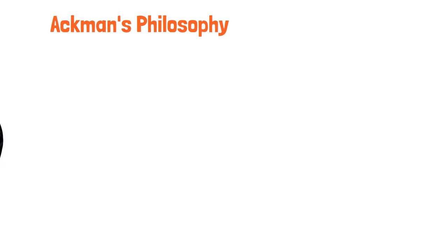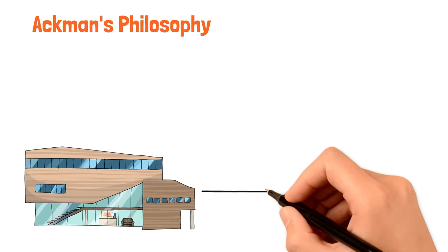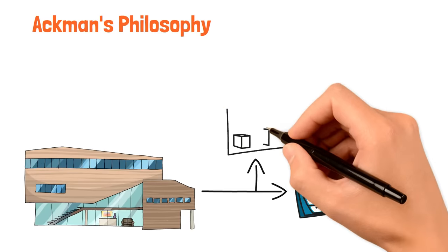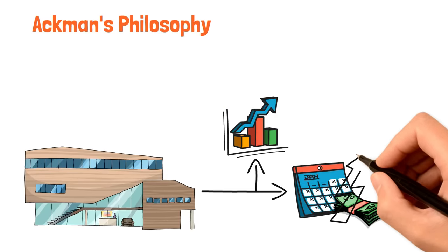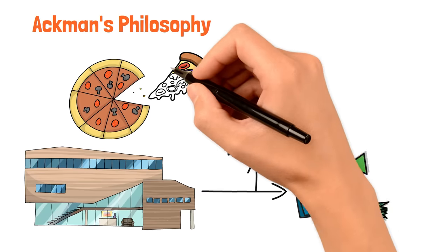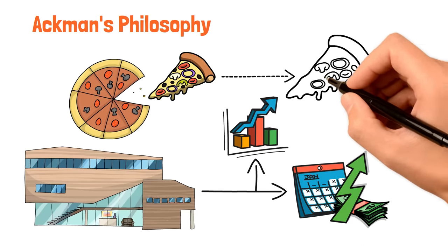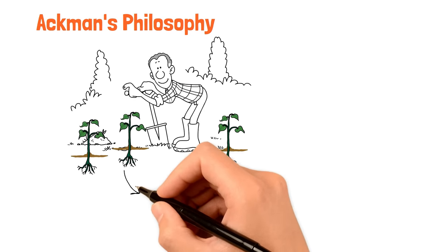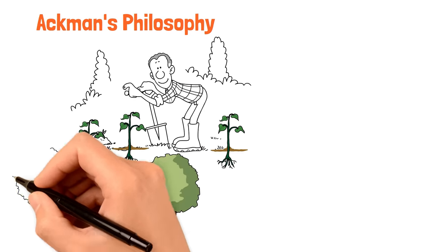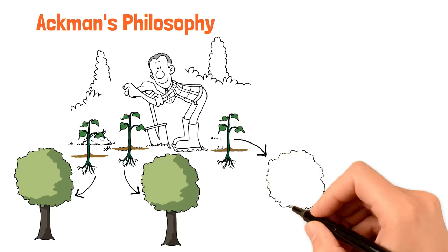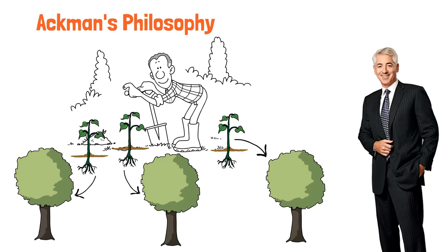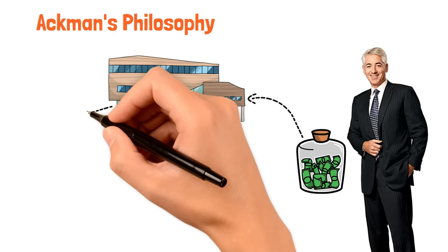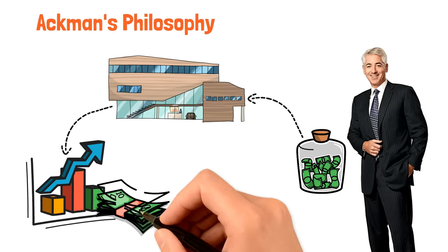But here's where it gets interesting. Ackman doesn't just pick any company that pays dividends. He's looking for those that have the promise of growing, of increasing their dividends over time. It's not just about getting a slice of pie today. It's about making sure that that slice gets bigger and bigger. Imagine that you're planting a tree. You wouldn't want one that just grows tall, but also grows strong, with deep roots and more branches. That's how Ackman sees his stocks. He's planting seeds in companies that are not just strong today, but will grow stronger, more dominant, and more profitable as time goes by.